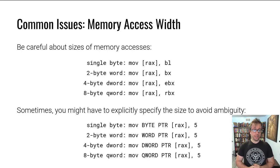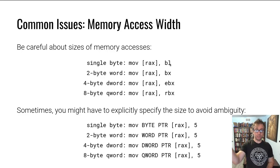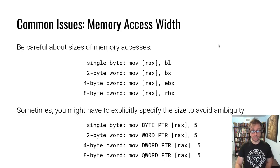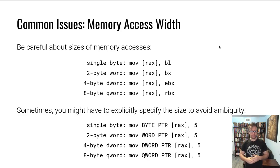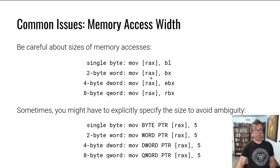In the simple case where you're moving a register into a memory location, this first single-byte example will move the least significant byte of RBX into the memory location pointed to by RAX. These writes are sized according to the size of the register. If you write BL it will write a single byte; BX, two bytes; EBX, four bytes; RBX, eight bytes. Nice and simple.